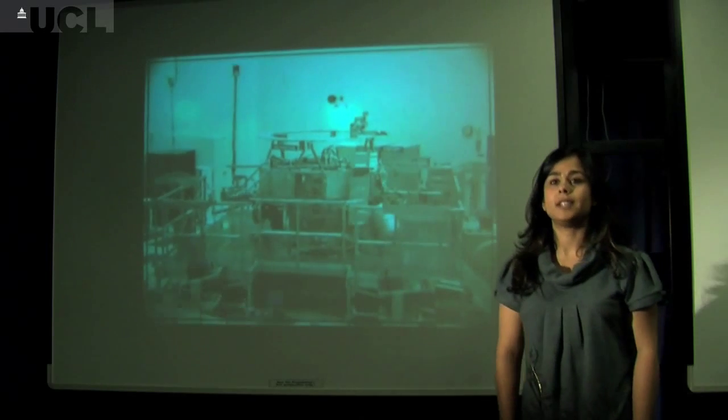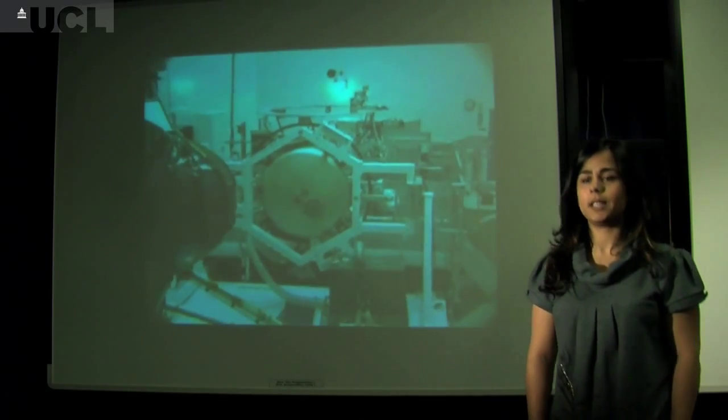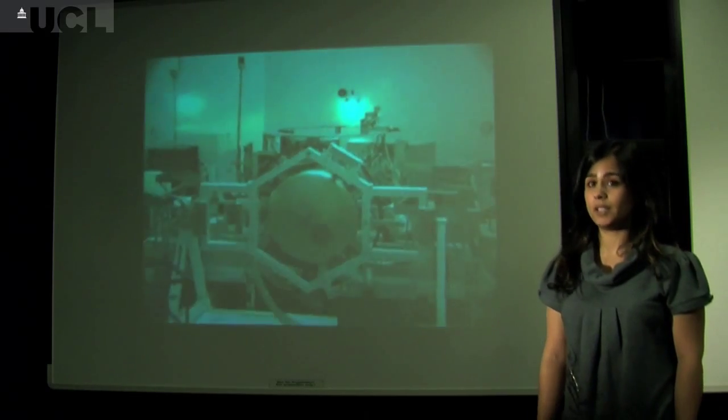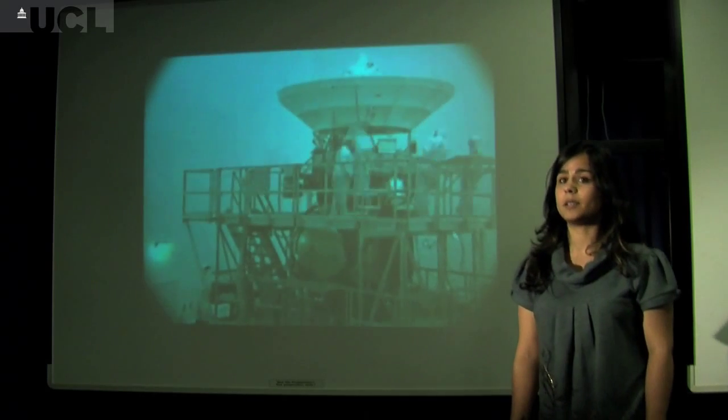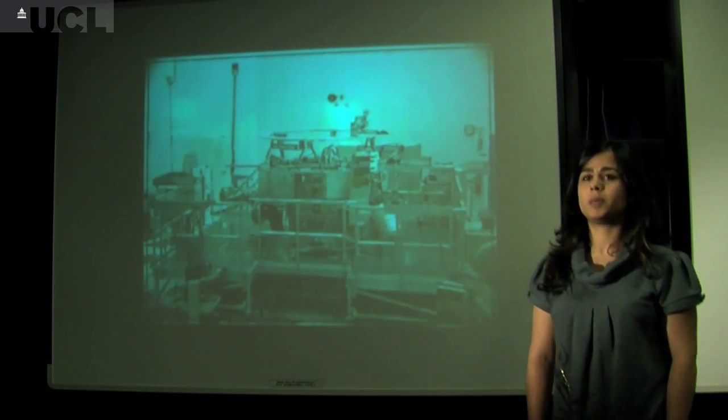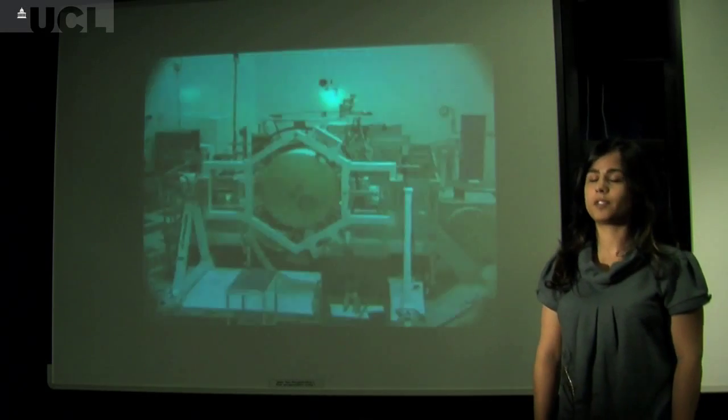The Cassini spacecraft is a NASA and ESA joint mission. It was built in the late 1990s, cost about five billion dollars, so it was really expensive. But the information that it's been giving back about the Saturn system has been so incredible that it's been worth every penny. This is a time-lapse movie of Cassini being built in NASA's JPL.